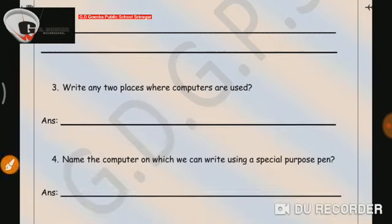Question number 3 is, write any 2 places where computer is used. Yes, we know so many places now, where computers are used. So, we can write any 2 places. Like, schools. Number 2, hospitals. So, you can write any 2 places as per your own choice. Alright?